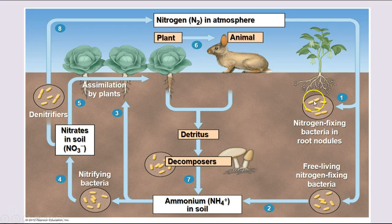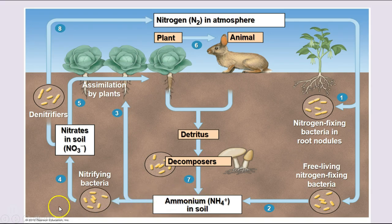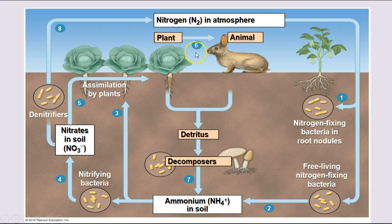Nitrogen-fixing bacteria in the root nodules of some plants, and free-living in the soil, take nitrogen gas from the atmosphere and change it into compounds like ammonium and nitrates. Some bacteria take the ammonium and change it into nitrates that can be assimilated by plants — plants can also assimilate ammonium directly. Denitrifying bacteria take some of those nitrates and release nitrogen back to the atmosphere. When plants and animals die, they produce detritus, which is broken down by decomposers to release nitrogen compounds like ammonia back into the soil, completing the ongoing cycle.